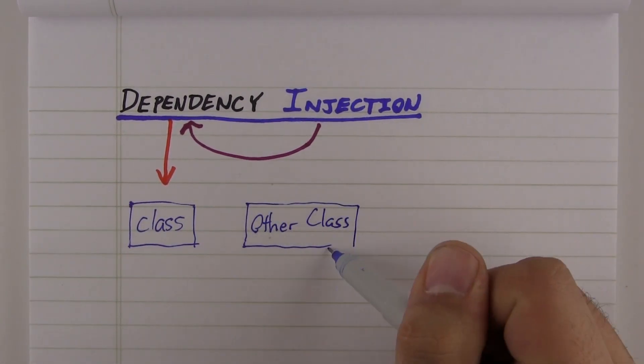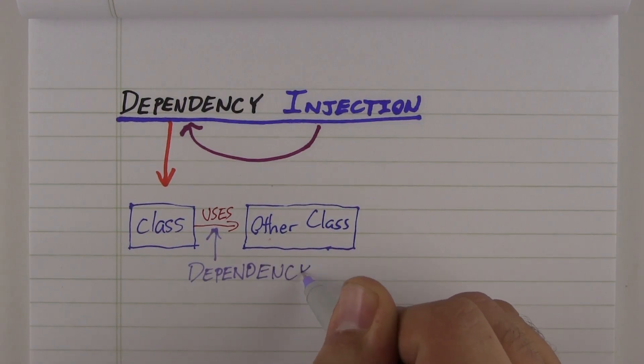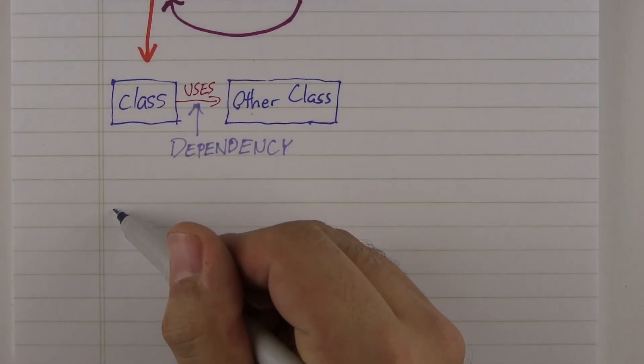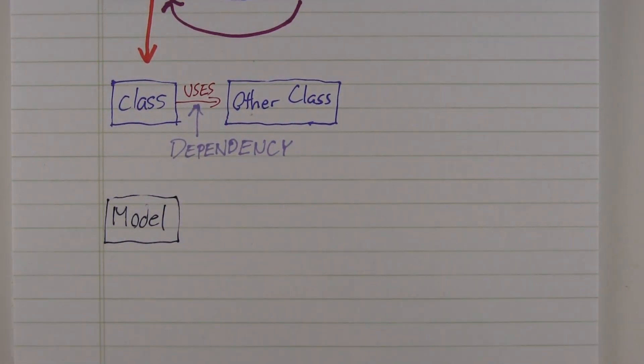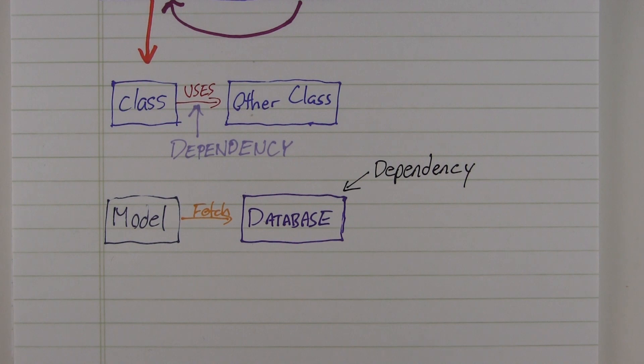A dependency is just another object that your class needs to function. So if you have a model class that fetches data from a database object, we can say that your model class has a dependency of that database object.